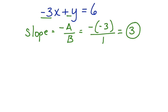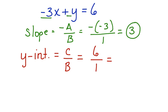Now let's look at the y-intercept. The y-intercept is found by putting c over b. In this case, our c is 6, and our b is 1. So the y-intercept is 6. And our work is complete.